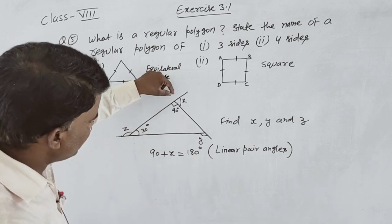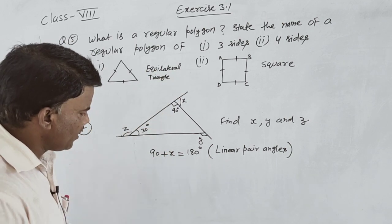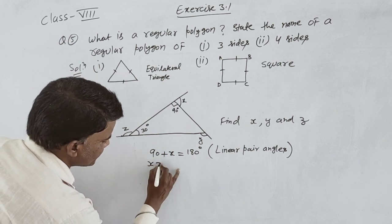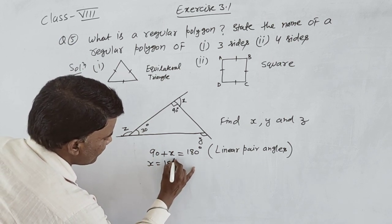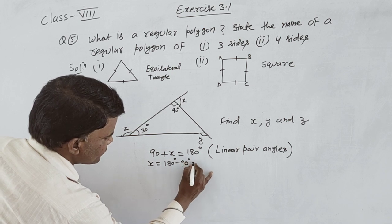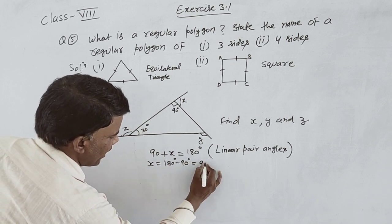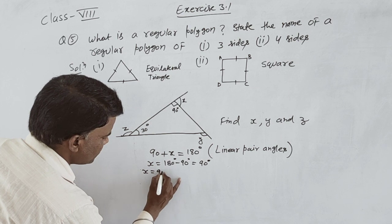Using linear pair angles, 90 plus x equals 180. Then x equals 180 minus 90, so x value is 90 degrees.